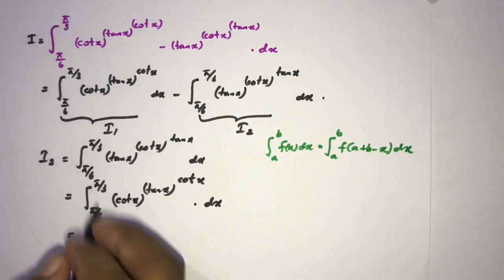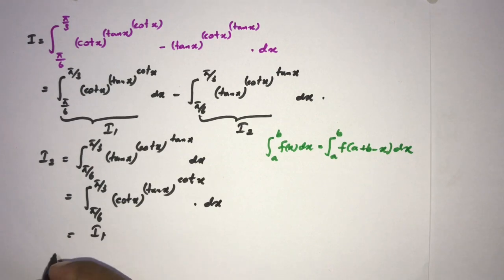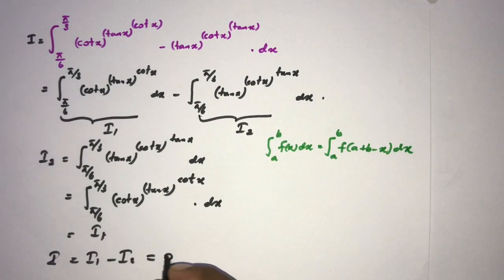Okay, now we know I is equal to I1 minus I2, but I1 and I2 are equal, so the answer is 0. Thank you for watching.